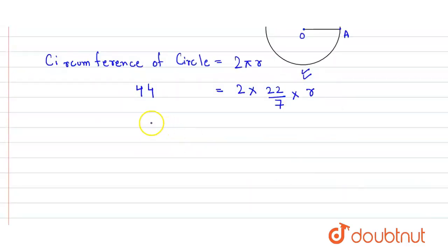So here we get r is equal to 44 into 7 divided by 2 into 22. Here we have cross multiplied. So this 22 cancels this 44, we get 2, and then again this 2 cancels this one. So we get the value of r which is radius equal to 7 centimeter.